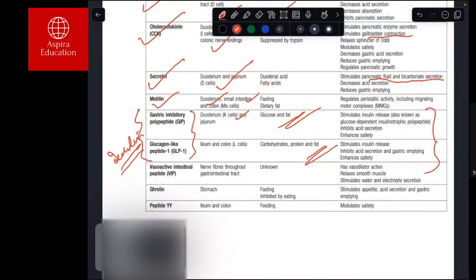There is vasoactive intestinal polypeptide, which is produced by nerve fibers. Their exact substrate is not known, but they produce vasodilation, relax smooth muscles, and stimulate water and electrolyte secretion. Tumors that produce VIP are known to cause diarrhea. There is also ghrelin, which is produced by the stomach during fasting and stimulates appetite.